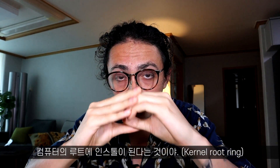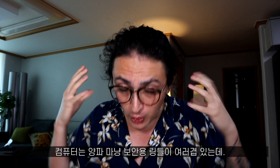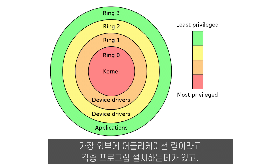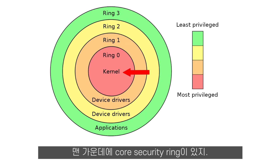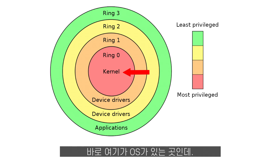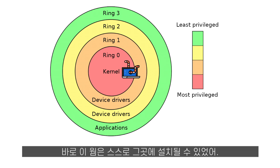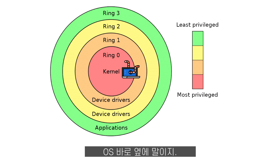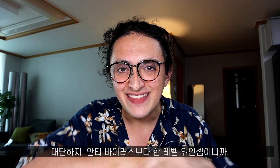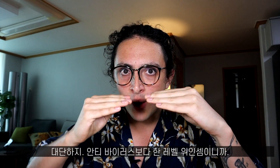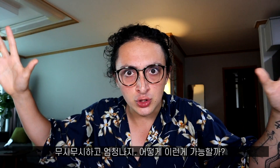The most interesting part is that this worm installed itself on the kernel root ring of your computer. Computers have many security rings: the outermost is the application security ring where every installed application goes, then the driver security ring, and at the center the core security ring — basically where the operating system lives. The worm was able to install itself there, next to the operating system. That means the worm could control what the antivirus saw or didn't see — it was essentially one level on top of the antivirus.